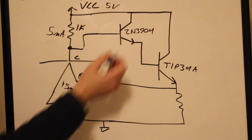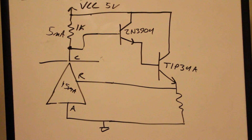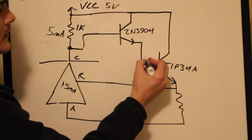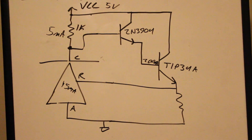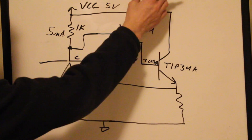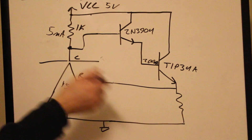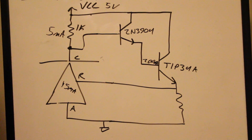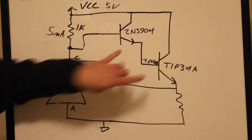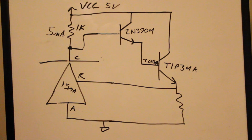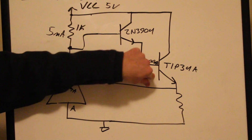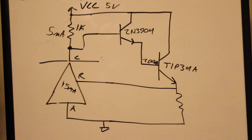The 2N3904 can do up to 200 milliamps safely. Imagine what 200 milliamps of base current calculates out to on the power transistor with a beta of 25 — that's a lot of current. This is a way to get more base current for the power transistor, and that's exactly what I have set up on the breadboard. The TIP34A is a power transistor that can drive tons of current, and this whole circuit works like a charm. This may look familiar — it's the same kind of setup as a Darlington pair.